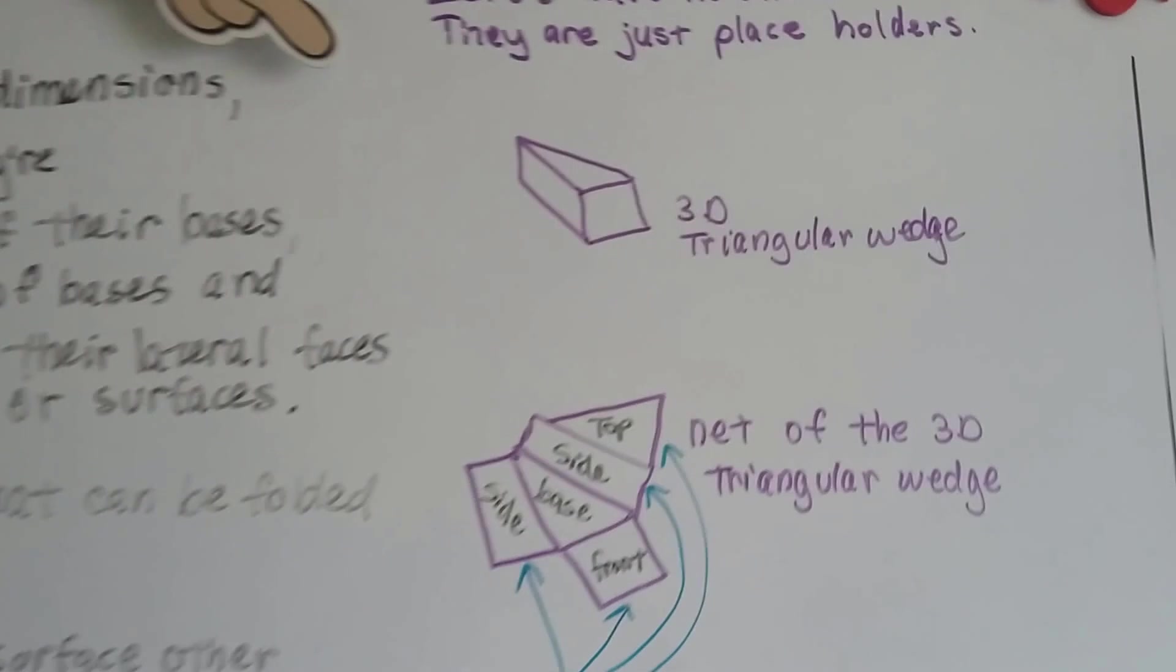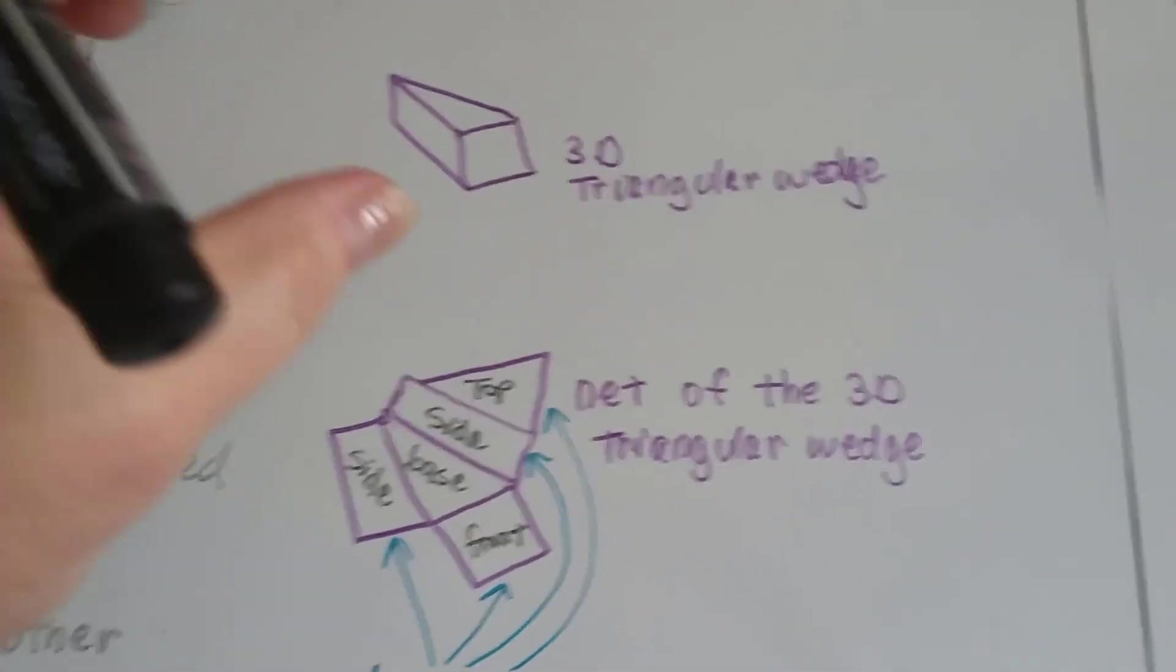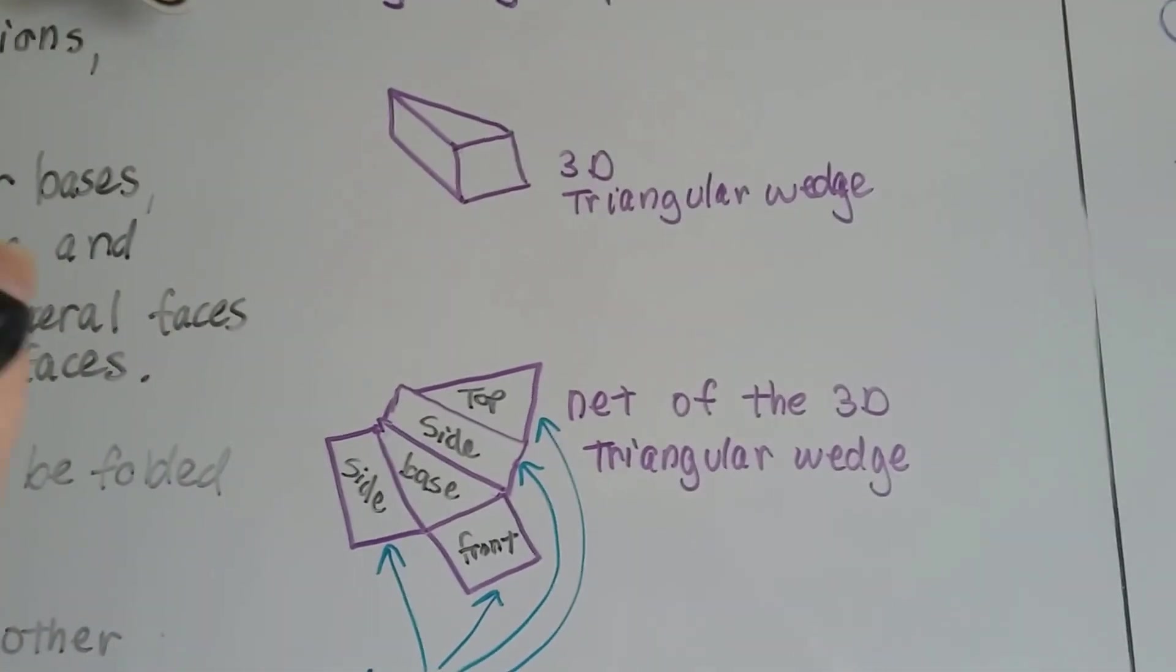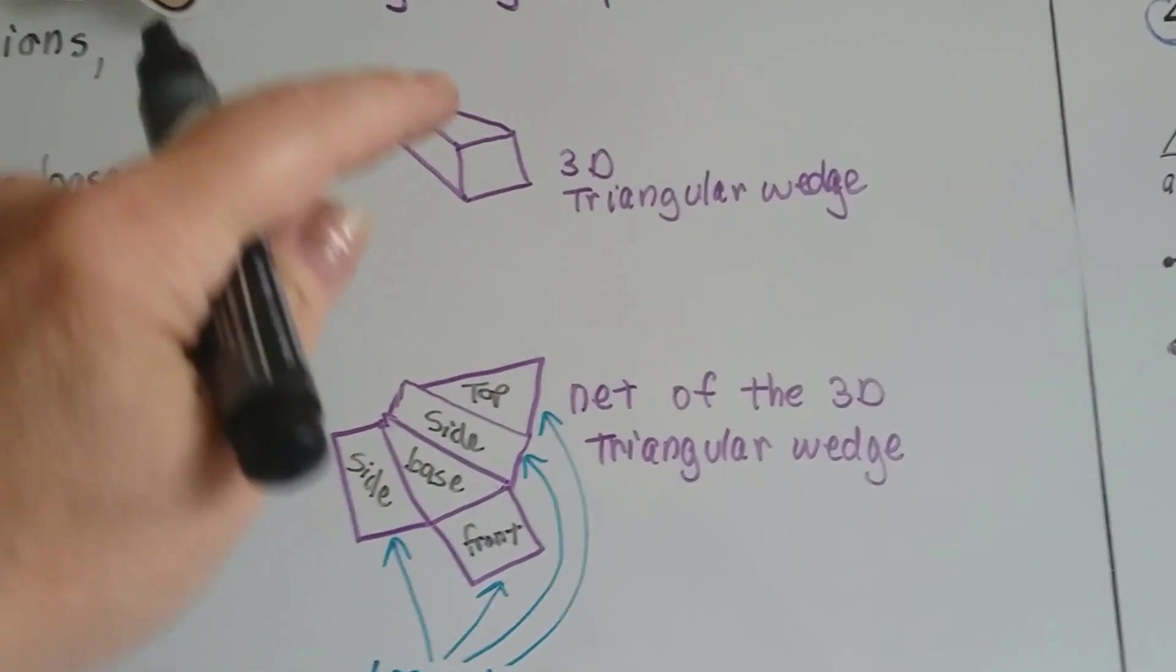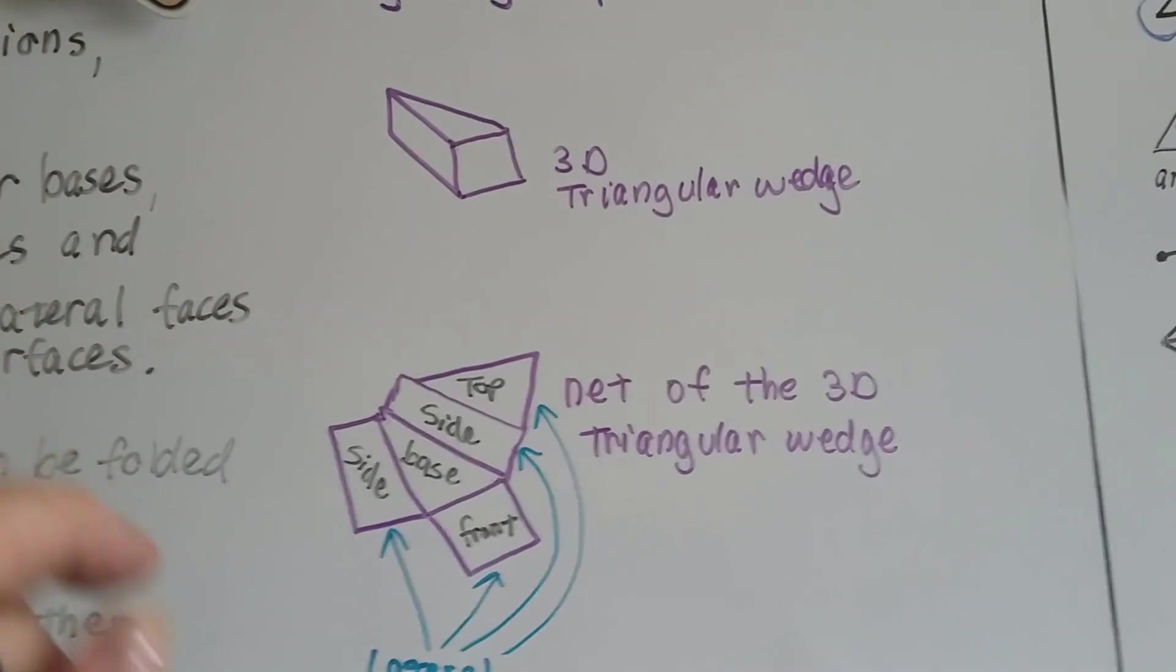I have a 3D wedge here. You can see it's got a top and a bottom. Does it look like a piece of cheesecake? It's got a square in the front, and there's a rectangle here and there's a hidden rectangle on the other side.